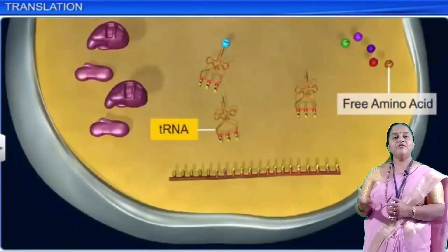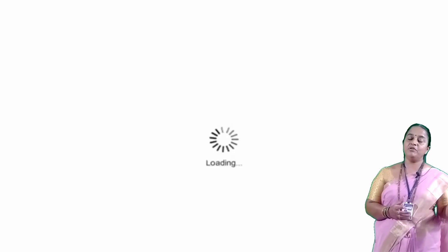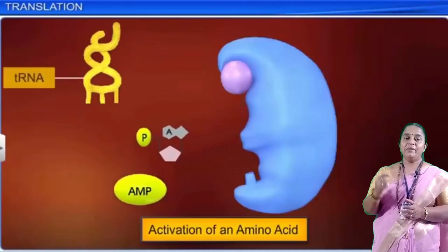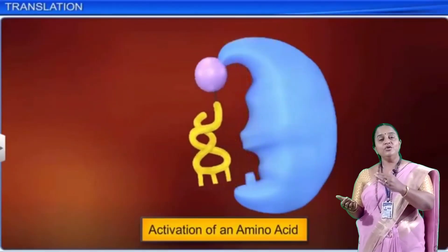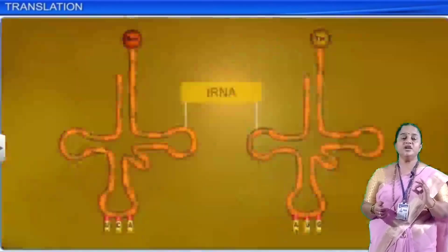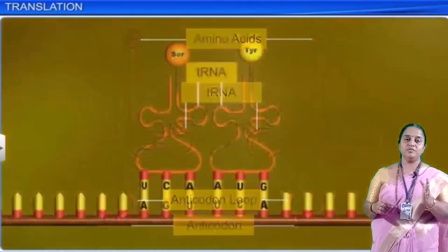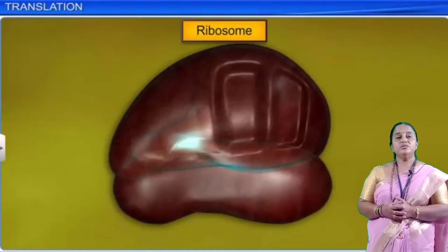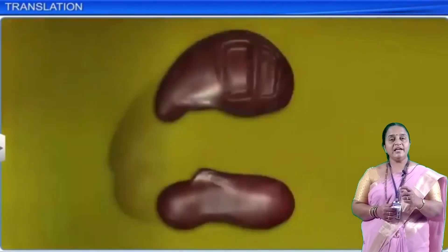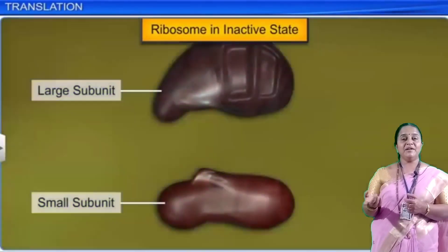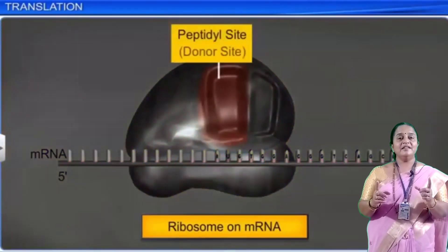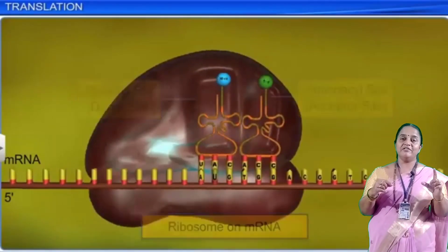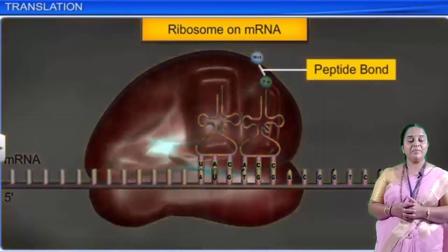Meselson and Stahl cultured E. coli in different media — 15N and 14N — and proved that DNA replication is semi-conservative and bi-directional. According to them, a parental DNA acts as a template to synthesize a new DNA strand, so in every DNA molecule, one strand is parental and one strand is new. DNA travels from generation to generation without undergoing denaturation. The mechanism of DNA replication involves helicase, topoisomerase, primase, DNA polymerase, and ligase working together. Replication starts at the ORI site, producing leading and lagging strands with Okazaki fragments, which are later joined by ligase.